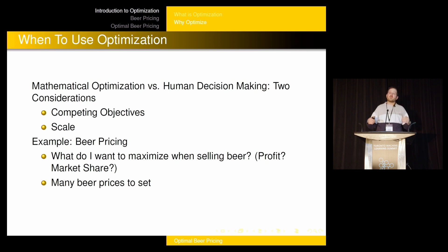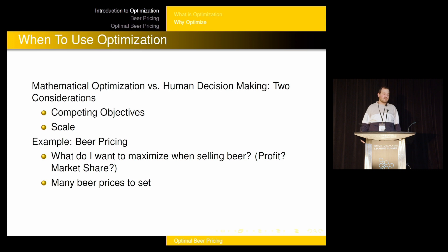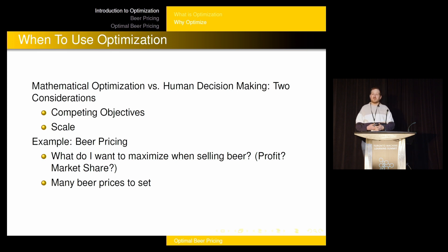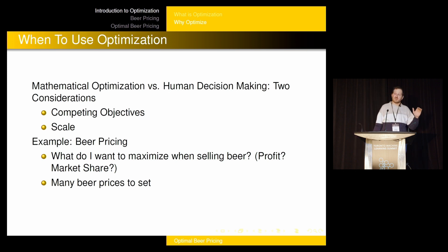The other reason why you might want to use software or mathematical tools is the scale of the problem. When the scale gets really big, it gets really hard to have humans make these decisions. We're going to see a very concrete example of that in a minute.